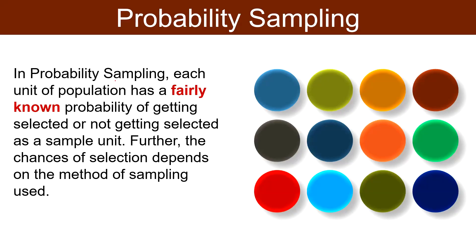Probability sampling. In probability sampling, each unit of population has a fairly known probability of getting selected or not getting selected as a sample unit. Probability sampling strictly follows the rule of probability at the time of selection of elements from the sampling population. Hence each unit of the population has the same probability of being included in the sample. This method is generally adopted when the number of elements in the population is known and measurable.